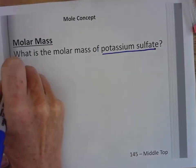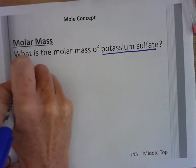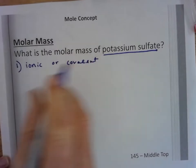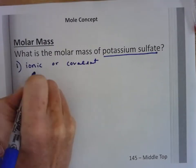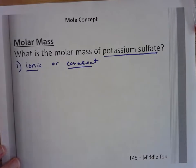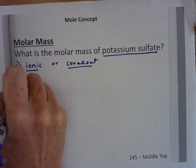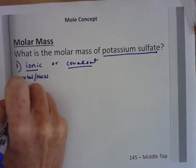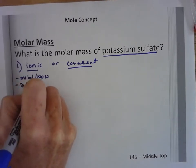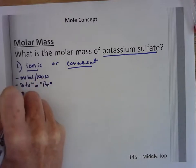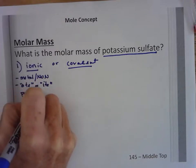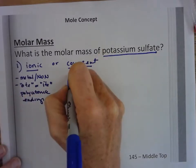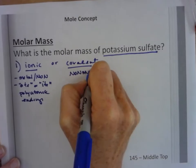The first thing we're going to do is decide if it's ionic or covalent. Ionic is made out of metals and non-metals, and they have the -ate or -ite polyatomic endings. Covalent is made out of non-metals and they use prefixes.